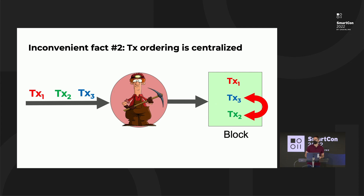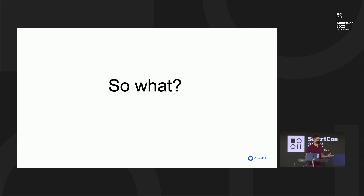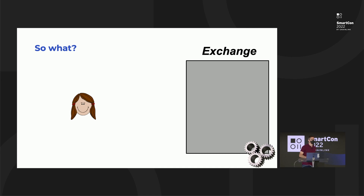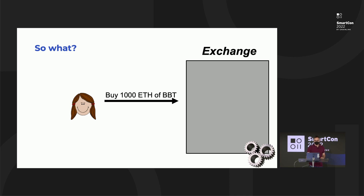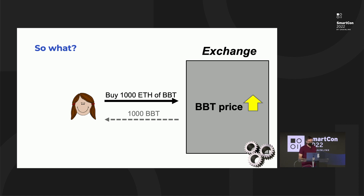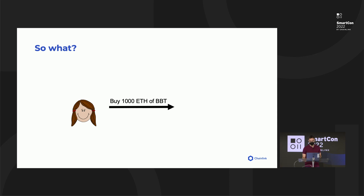So, two inconvenient facts — so what? In what respect are they inconvenient? Let me explain in terms of user interaction with a decentralized exchange, such as an AMM, Automated Market Maker. Suppose Alice wants to buy some Bob's Bubble token, and the prices of ETH and BBT are at parity — one ETH per BBT. Assuming no interference, our user Alice is going to get 1,000 BBT for her 1,000 ETH. As a consequence of her making this purchase, the price of BBT is going to rise with respect to ETH — she's buying the asset, so as in essentially any marketplace, the price is going to rise.